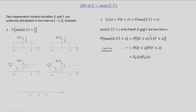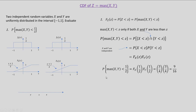The probability that x is less than z is the same as the CDF F_X(z), and the probability that y is less than z is the same as the CDF F_Y(z). So this gives the final CDF of the transformation z equal to max of x comma y, provided x and y are independent. Now let us evaluate the numerical example on the left side of the slide. We are interested in evaluating the probability that max of x comma y is less than half, which equals F_X(1/2) times F_Y(1/2), obtained by replacing z with half.